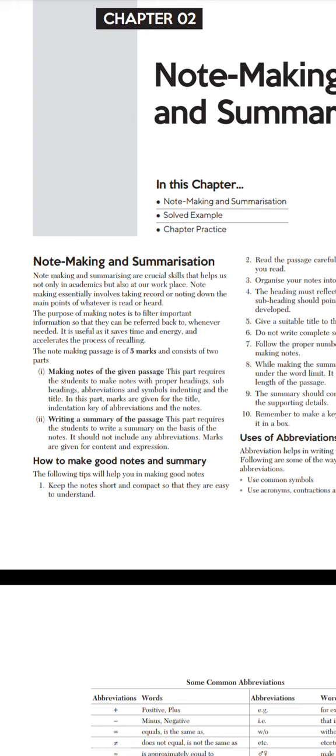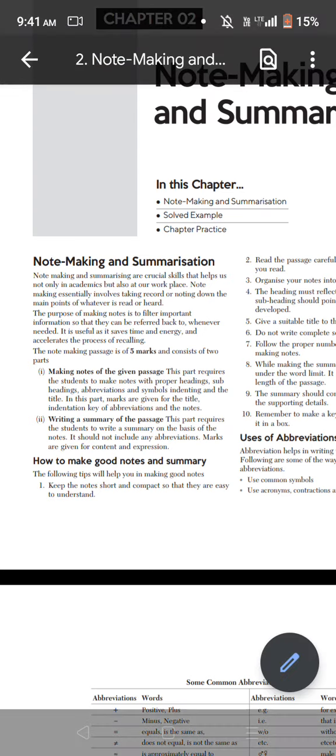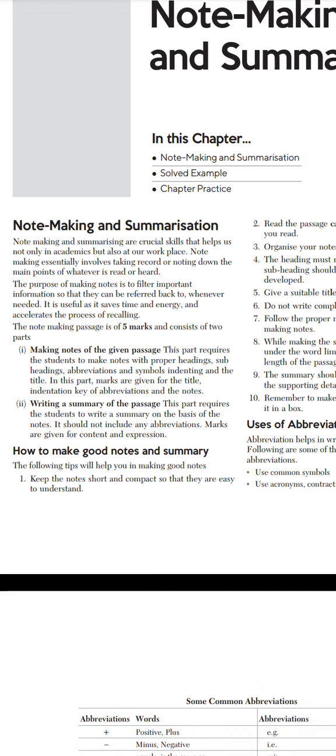The note-making passage is of five marks and consists of two parts: making notes of the given passage and writing a summary. The first part requires the student to make notes with proper headings, subheadings, abbreviations and symbols, indenting and the title.